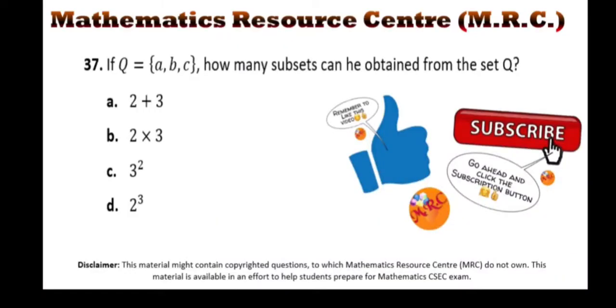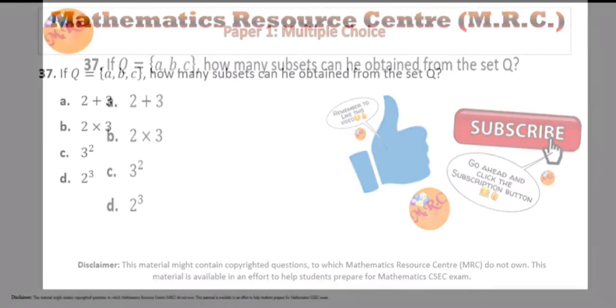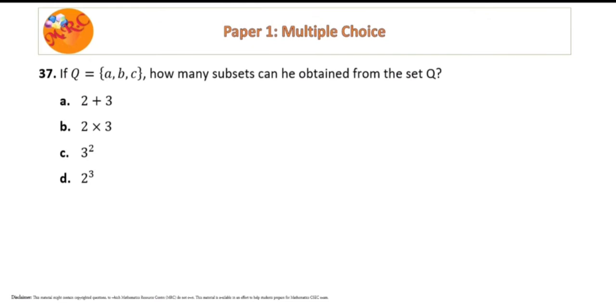Hello, welcome to our channel Mathematics Resource Centre. Pause the video and read through the question and we are ready to begin. The question is: If Q equals {a, b, c}, how many subsets can we obtain from the set Q?